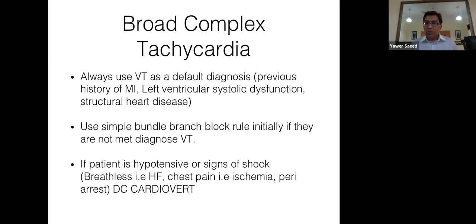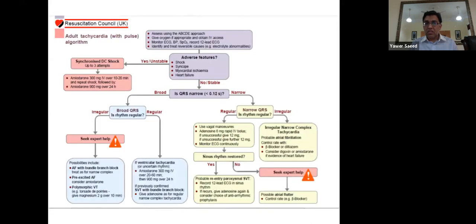If the patient is stable, take time to determine the type of broad complex tachycardia. If the patient is hypotensive with signs of shock, cardiovert immediately. Refer to the Oxford Handbook for initial management of broad complex tachycardia — these are very good guidelines.